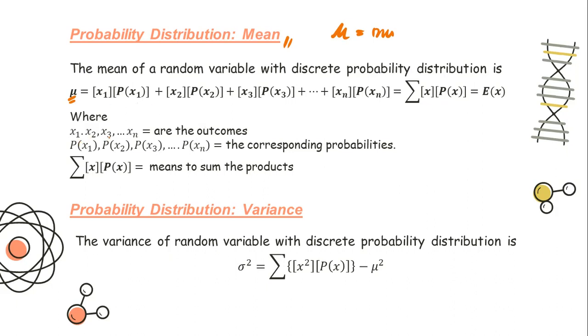For the variance, this is our symbol for the variance, sigma squared. We are going to get the sum of the product of the outcome and its corresponding probability. But the difference is, the outcome here is squared. After we get the sum of the product of the squared outcome and its corresponding probability, we are going to subtract it to our mu squared.